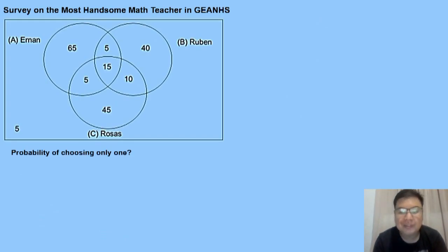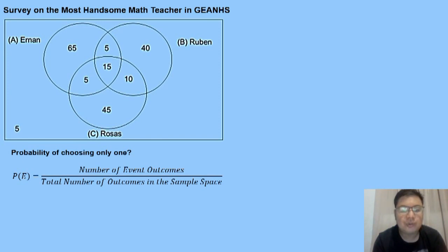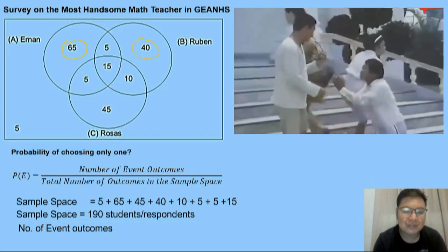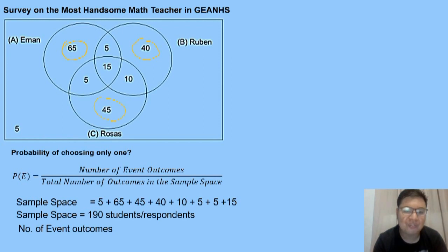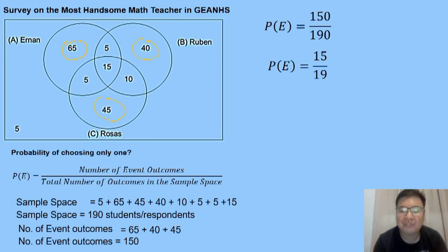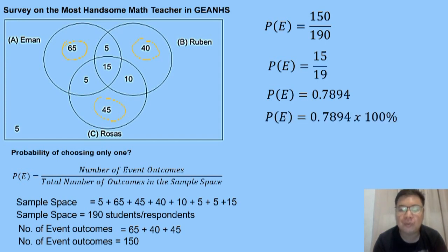Next: probability of choosing only one teacher. The students who chose only one teacher are the exclusive portions of each circle: 65 (only Sir Ernan), 45 (only Sir Rosas), and 40 (only Sir Ruben). Adding those: 150. So 150 over 190, lowest term is 15 over 19, which equals 0.7894 or 78.94% — the probability that students chose exactly one teacher.